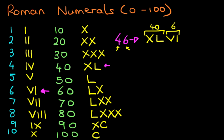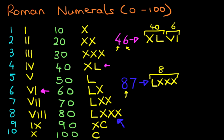Now let's look at one more example. Suppose we have 87. How do we write 87 in Roman numerals? Well, again, we start with the tens — that is 80. How do we write 80? Well, it's over here. 80 is LXXX — that's 50, 60, 70, 80. So that is 80.